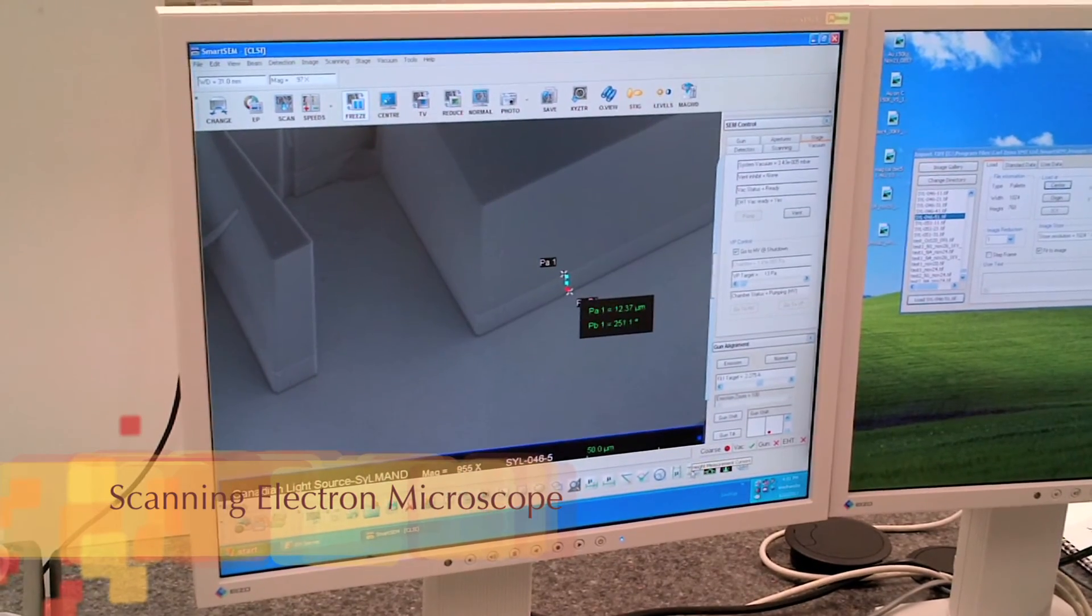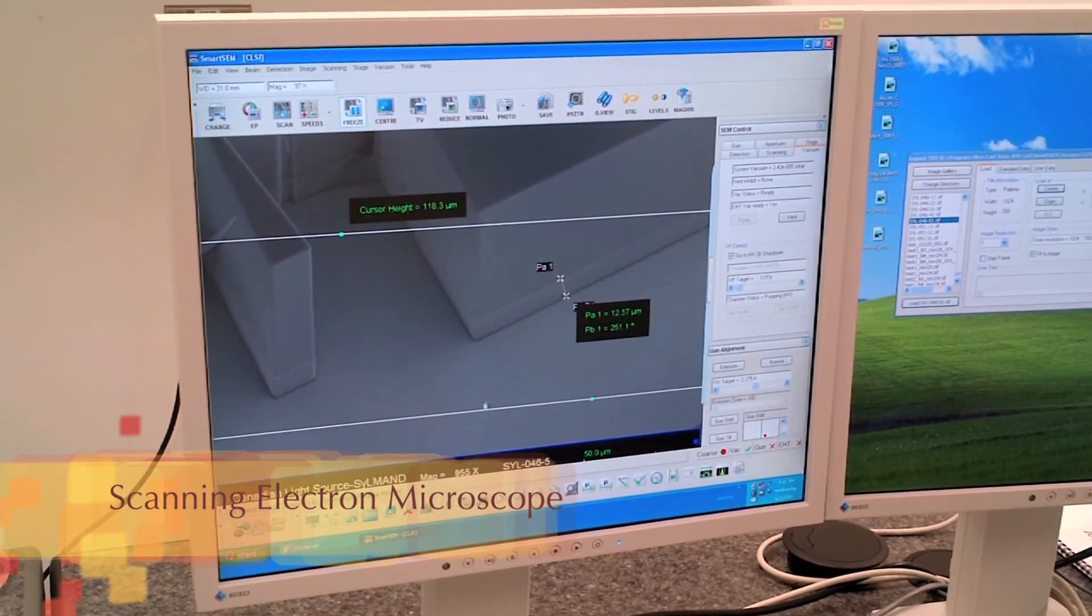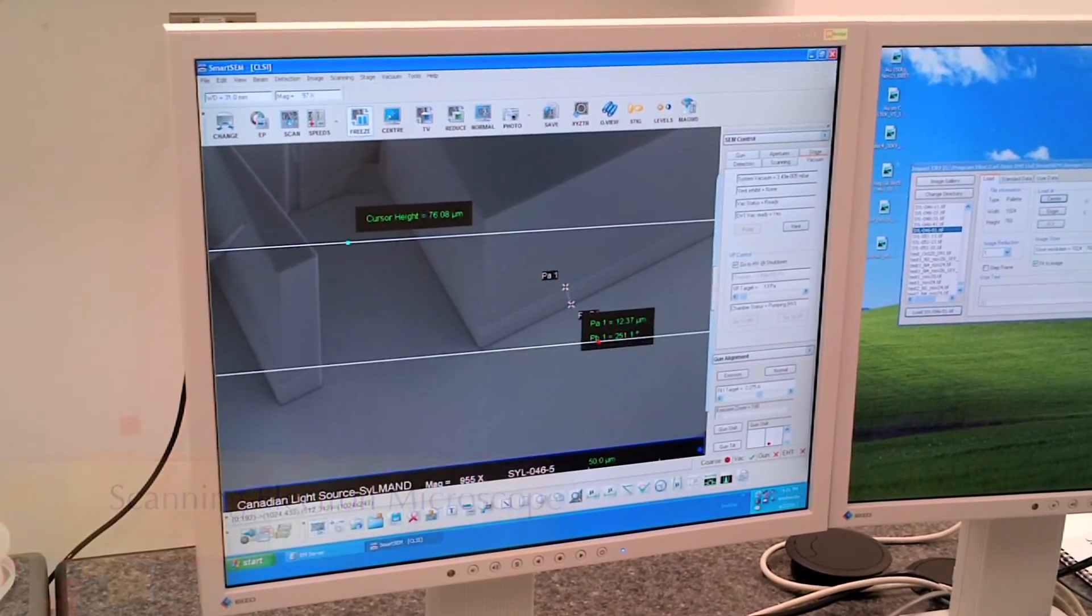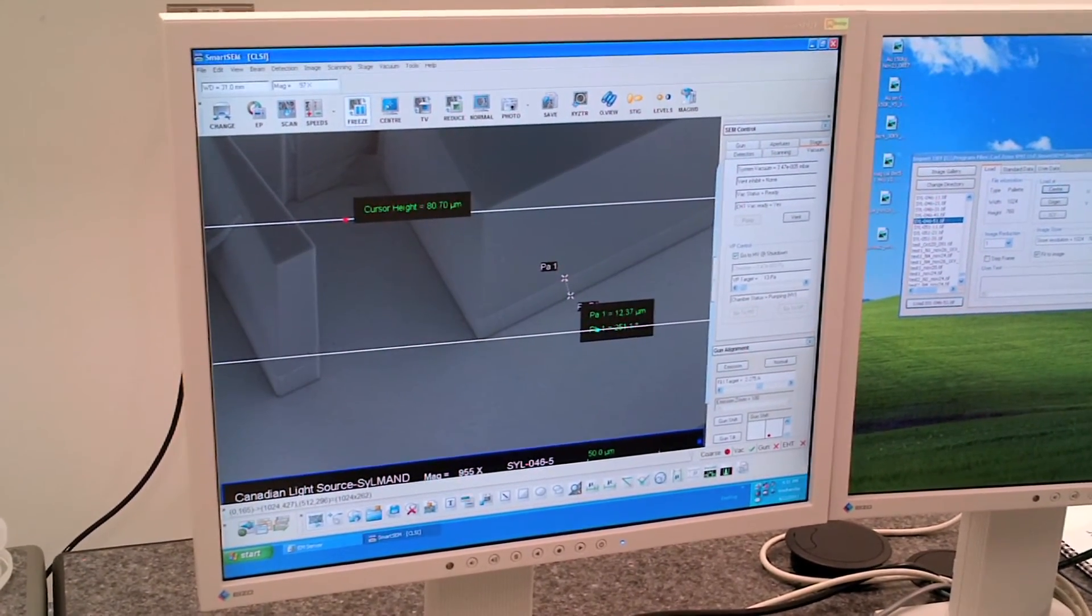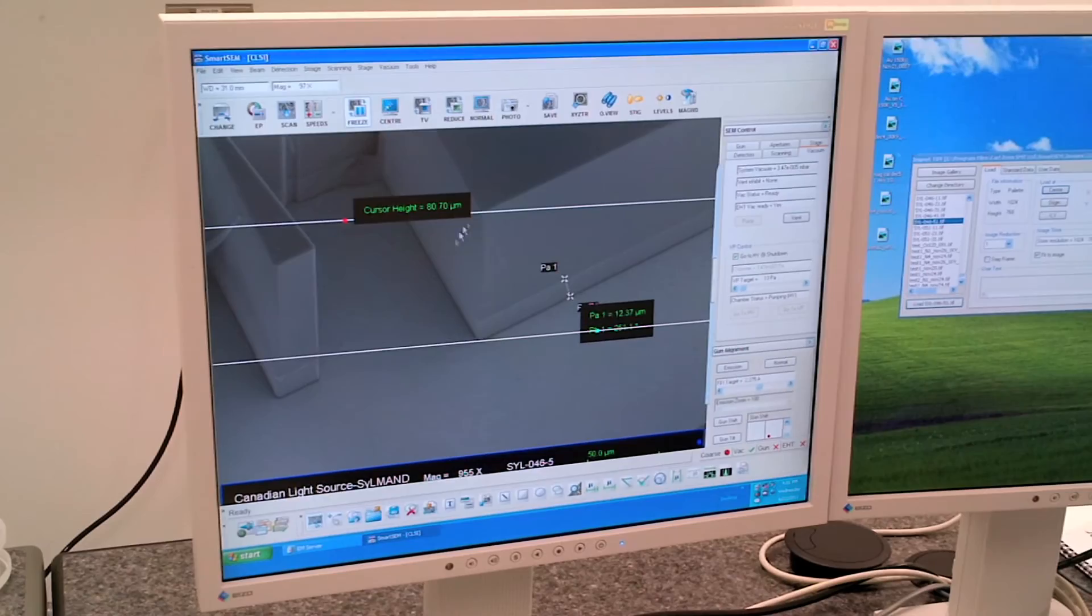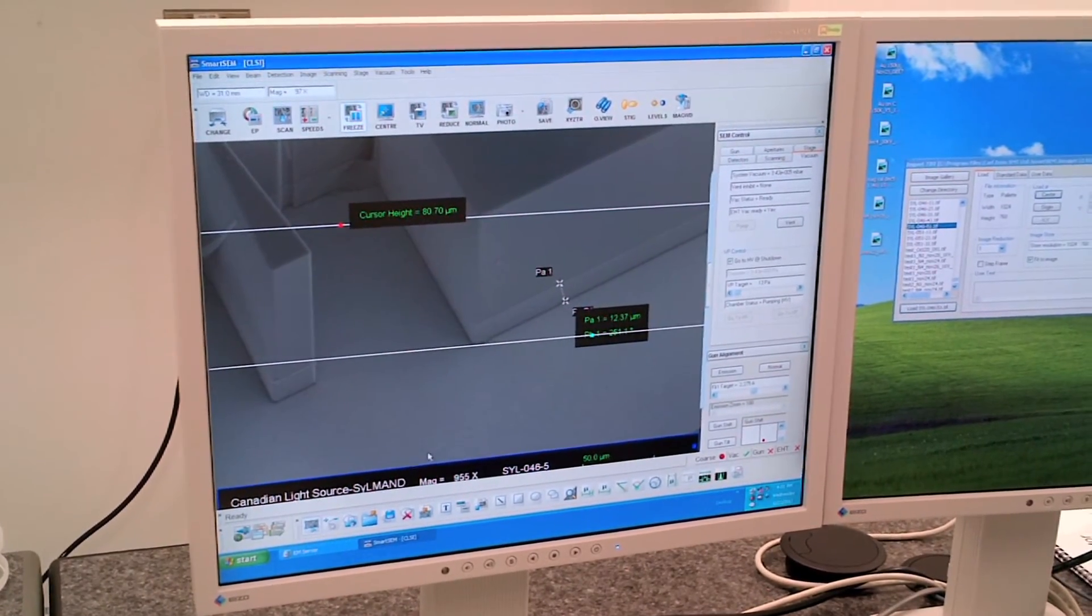If no defects are detected, the sample is passed along to the metrology stage for imaging with a scanning electron microscope. Once imaged, the samples are ready for use if they are meant to be polymer microstructures.